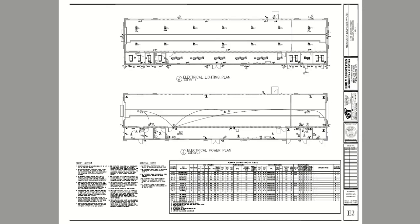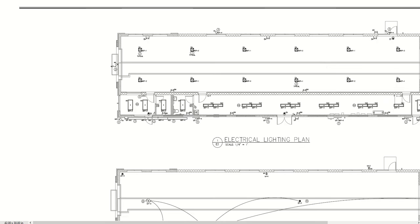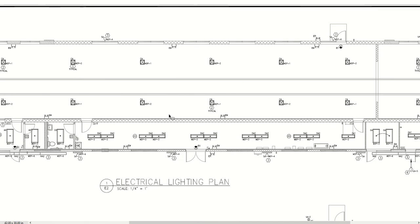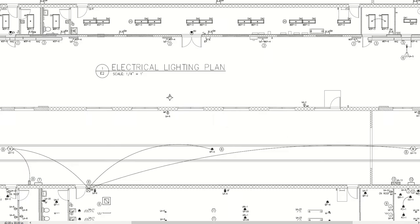This is a rather small building, so because of that we were able to put the lighting and power plans on the same sheet. As we look at this, I don't want to spend a whole lot of time on the lighting — we'll cover that in more detail later — but we do want to notice the circuit tags for each light, showing how it's circuited. That's the power aspect of the lighting plans.